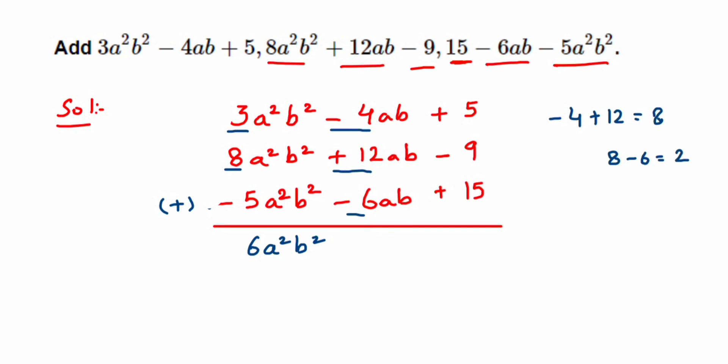The last one: 5 - 9 is -4 because 9 is greater. Then -4 + 15 equals +11, so we get a positive sign.